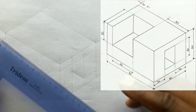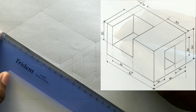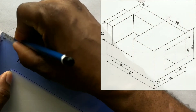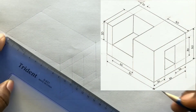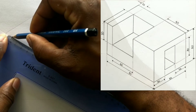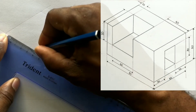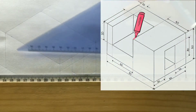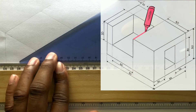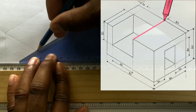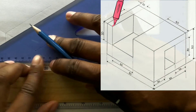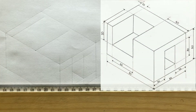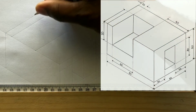Now measure and identify 10 millimeters from this point on this line. Also measure and identify 40 millimeters from this point, and identify the 40 millimeters and 20 millimeters on this line. Now measure and identify 20 millimeters from this point on this line, and again 20 millimeters from this next point on this line.